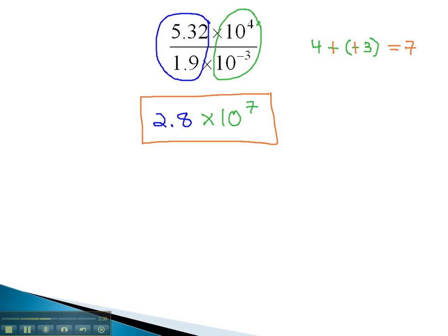With scientific notation, we can multiply or divide the numbers, and then simply use our exponent properties on the tens.